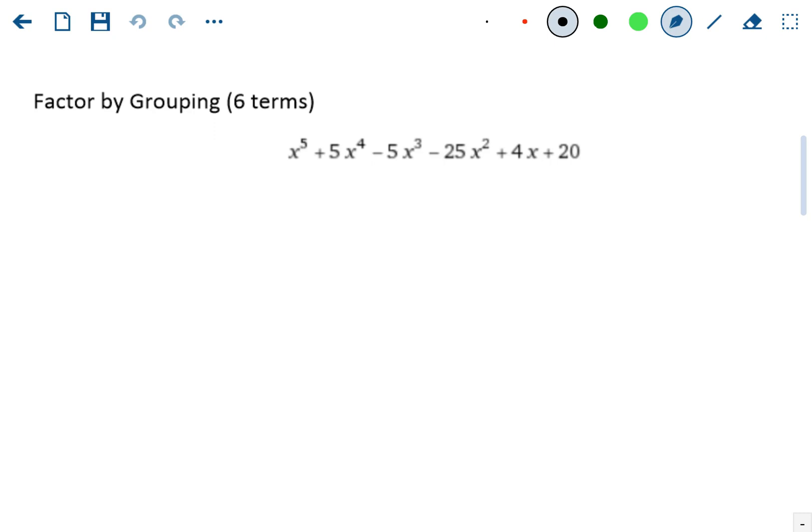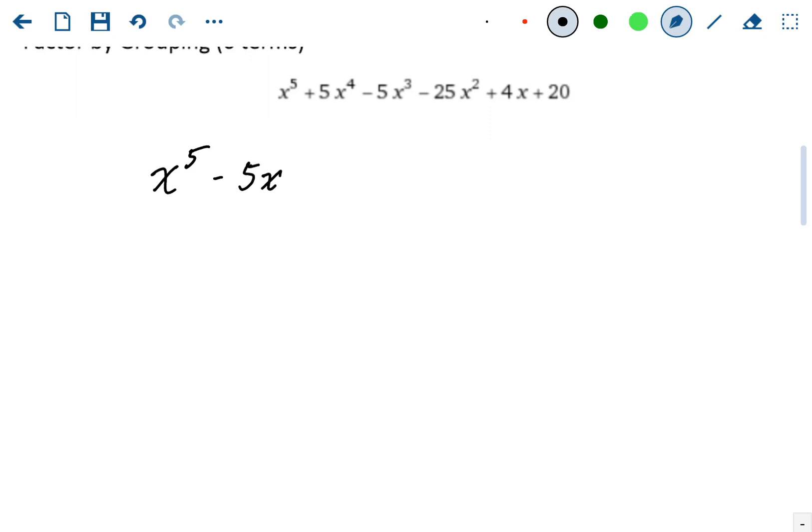So we're going to start this by rewriting it. So I'm going to start with all the odd exponents. So I have x to the fifth is going to stay out front, minus 5x to the third, and then plus 4x. So all of the odd degrees, 5, 3, and 1.